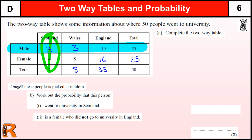From that table, we need to pick one person at random. Work out the probability that this person went to university in Scotland. So out of all 50 people, how many went to university in Scotland? Scotland is here, so the number of people who went to university in Scotland is seven. There are 50 people in total, so the answer is 7/50. We don't have to cancel it down — it doesn't actually cancel down — just leave it as a fraction.